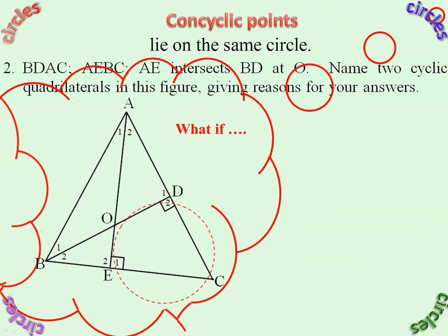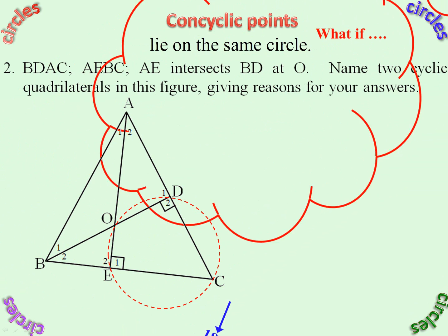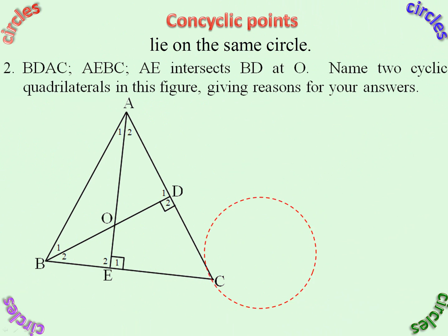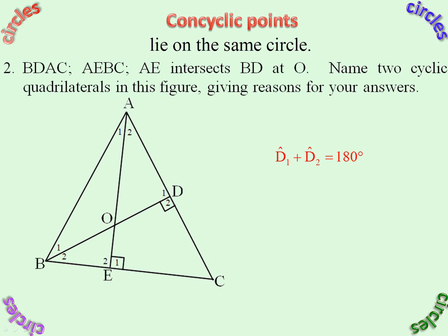Another thought process: how about those two angles there? D1 plus D2 is 180 degrees, therefore we have cyclic ODCE — Converse Opposite Angle Cyclic Quad.